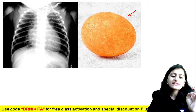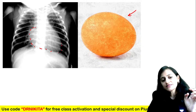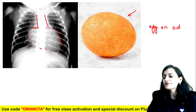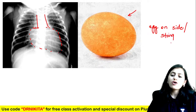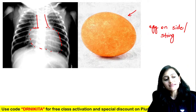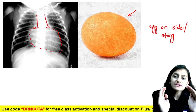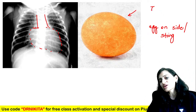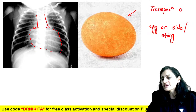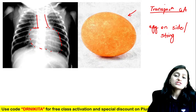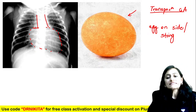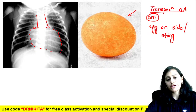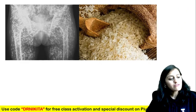This is the egg-on-side appearance, also called the egg-on-string appearance — you have the egg shape with a narrow superior mediastinum. Remember the mnemonic: we are transposing the egg to the side — Transposition of Great Arteries. It is seen with TGA, a cyanotic heart disease presenting in the newborn, especially if the mother has diabetes mellitus the risk is increased.